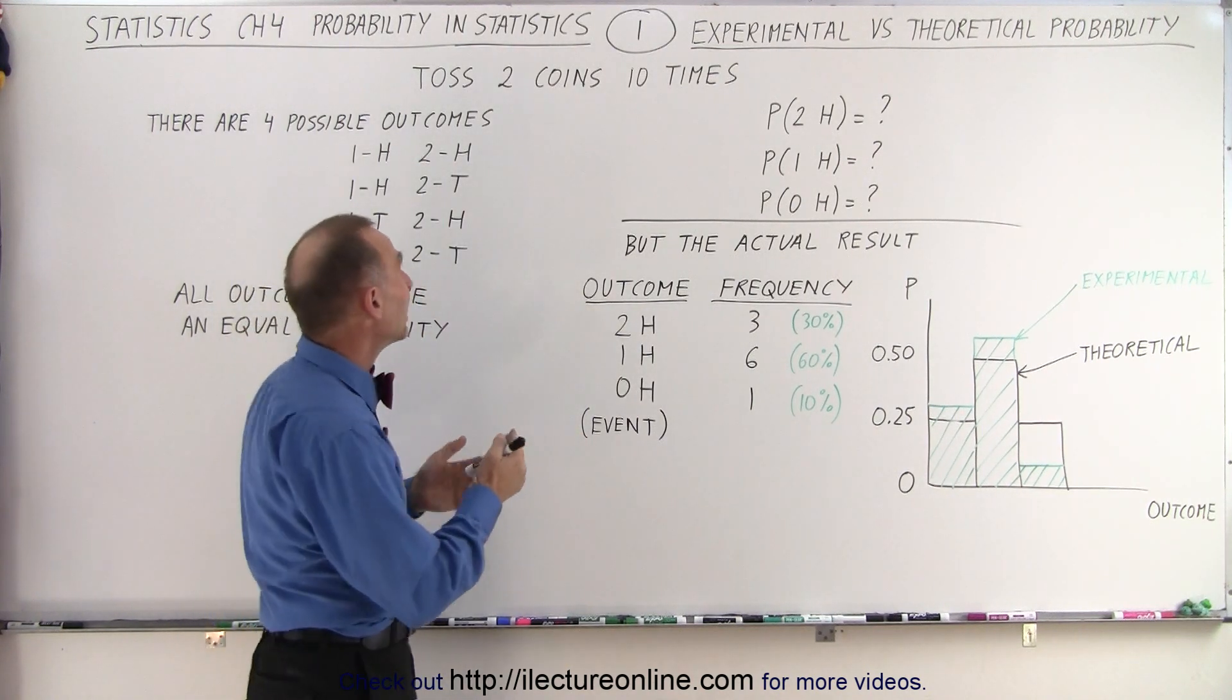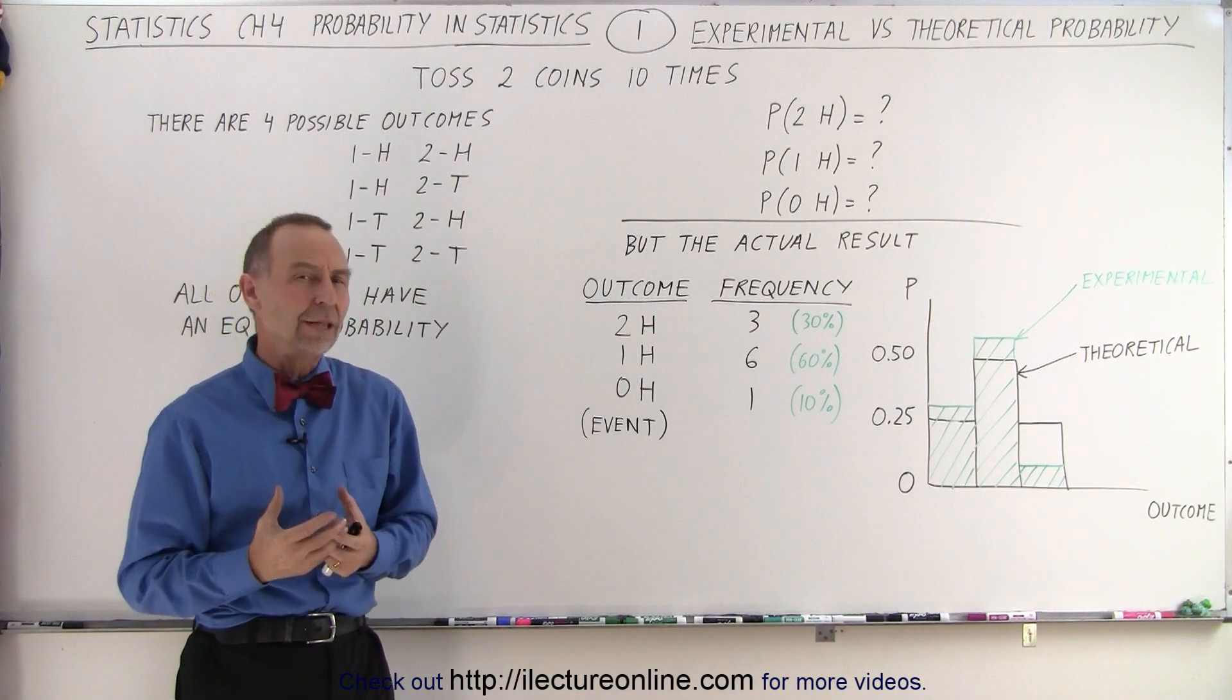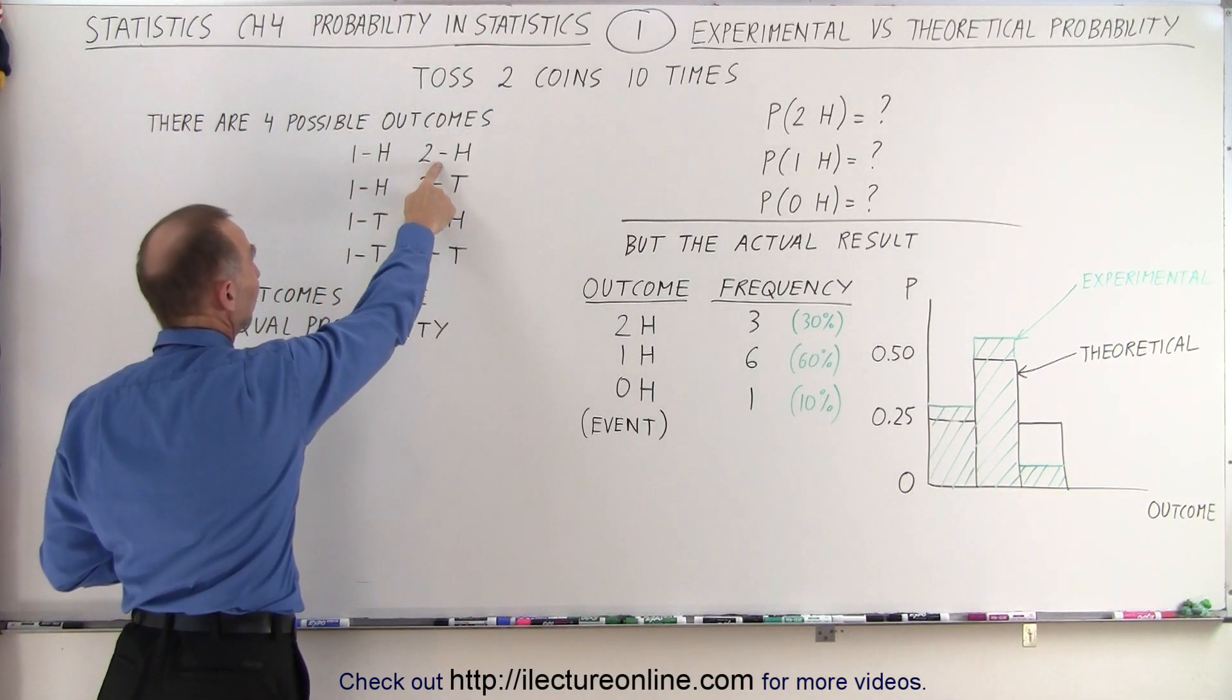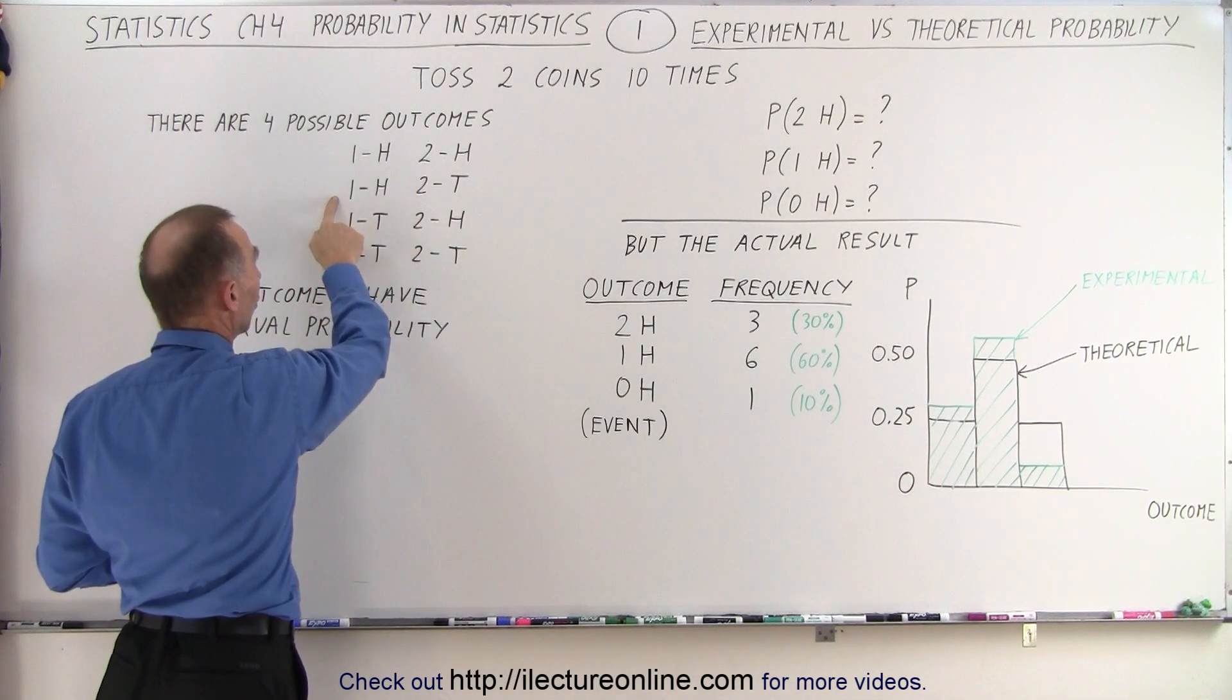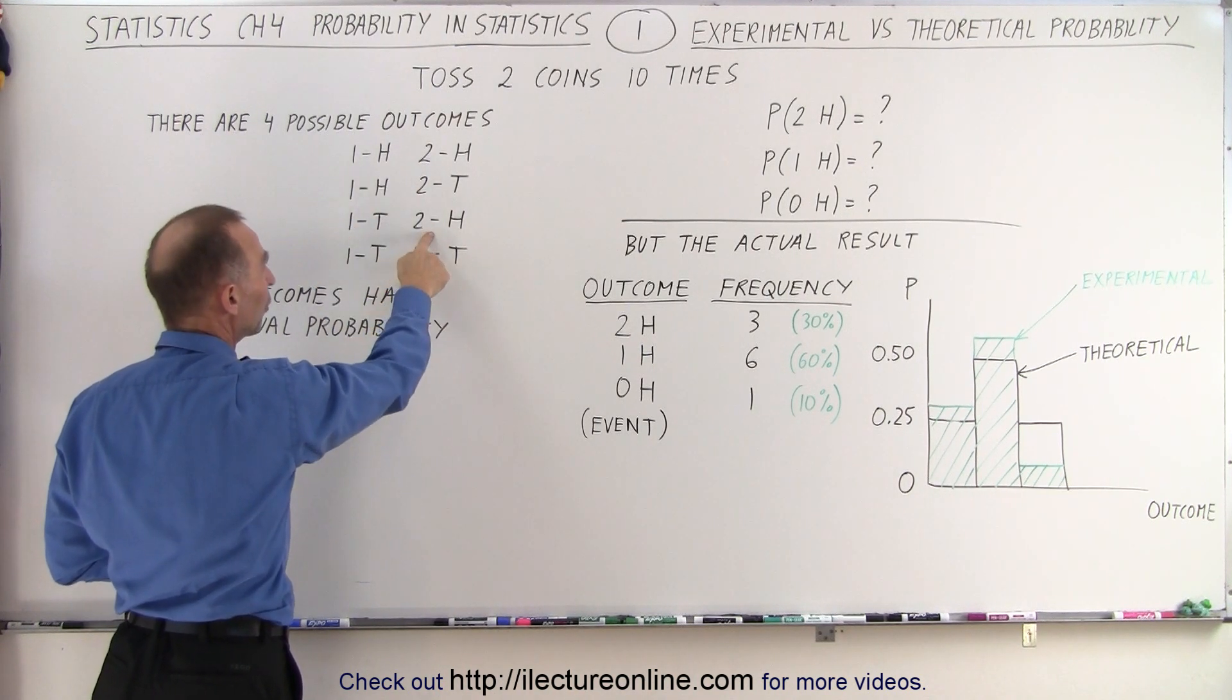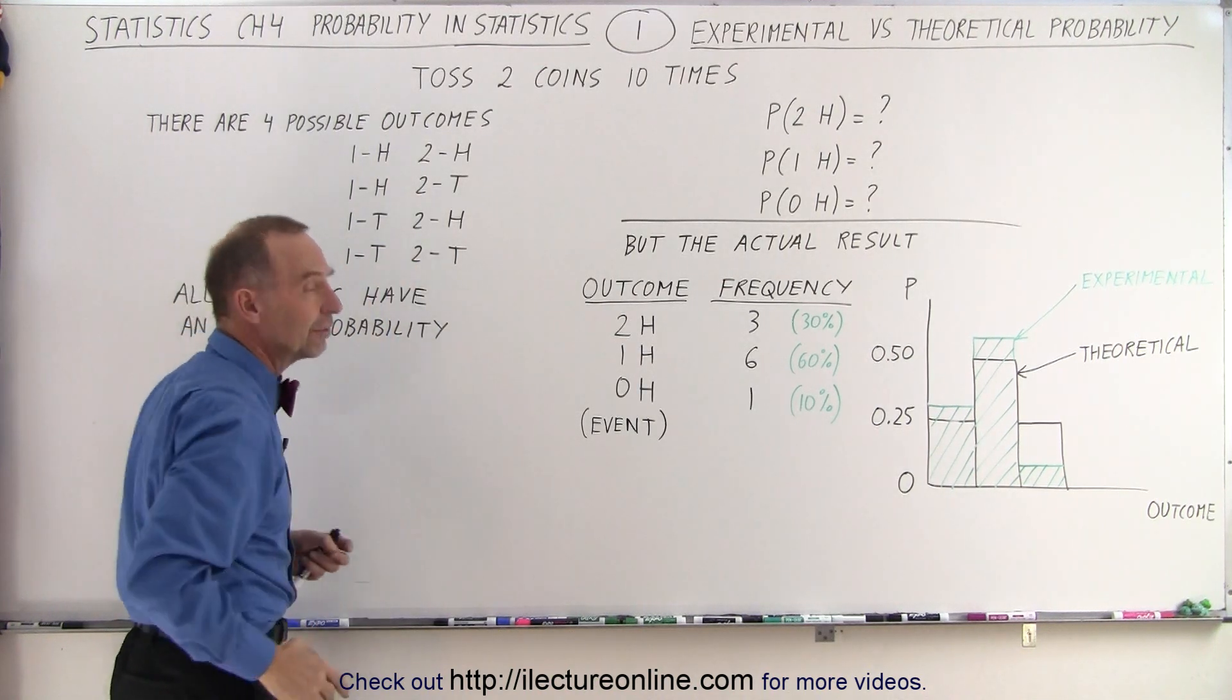So let's say that we take two coins and we toss them ten times. What are the possible outcomes? Well, we can have the first coin being head, the second coin being head as well, or the first coin being head and the second a tail, or the first being a tail and the second coin being a head, or the first being a tail and the second being a tail.